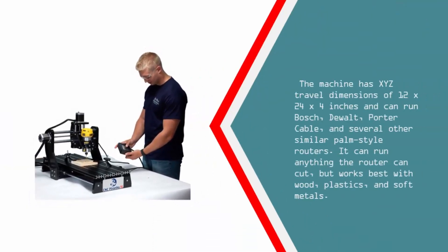The machine has XYZ travel dimensions of 12 x 24 x 4 inches and can run Bosch, Dewalt, Porter Cable, and several other similar palm style routers. It can run anything the router can cut, but works best with wood, plastics, and soft metals.